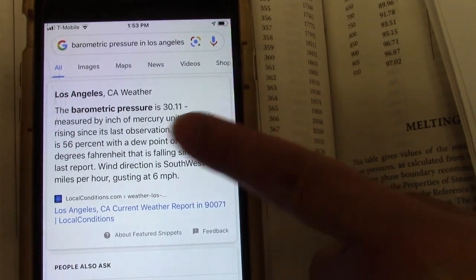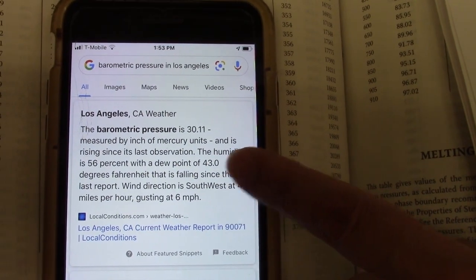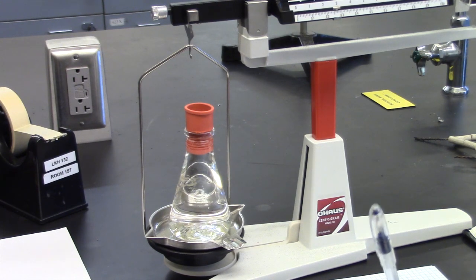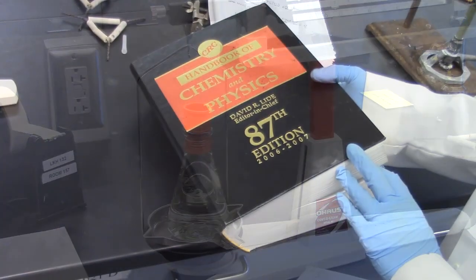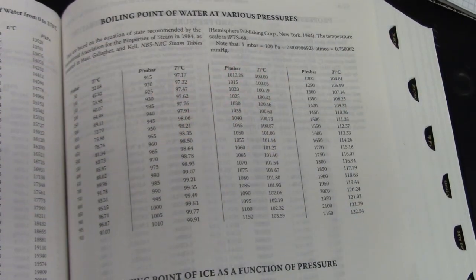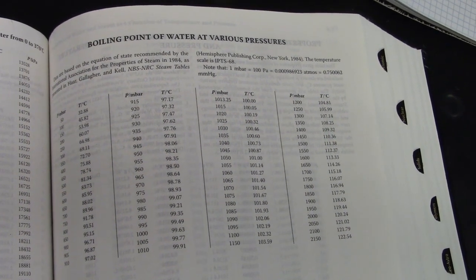Record the barometric pressure. Either Google it or use the barometer in the balance room. Record the temperature to which the flask was heated. The boiling point of water at the prevailing barometric pressure may be obtained from the CRC handbook of chemistry and physics.